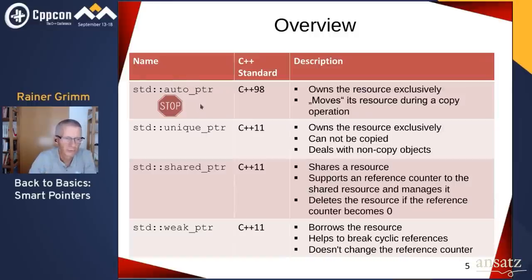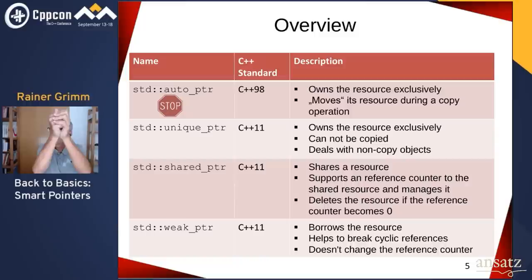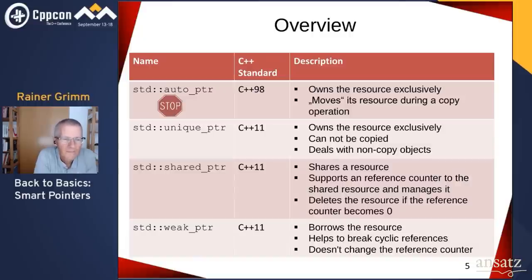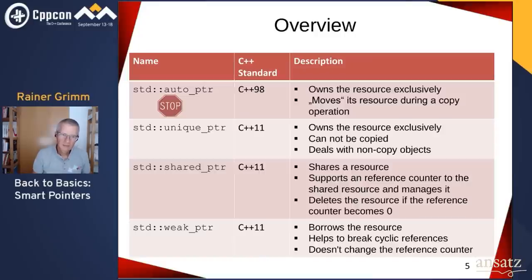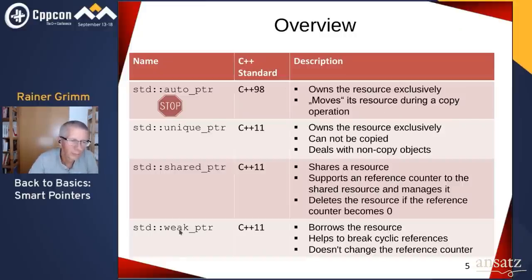Shared pointer models shared ownership. When you copy a shared pointer, a reference counter is increased by one. When you delete it, it decreases by one. When the reference counter becomes zero, the underlying resource is destroyed. Shared pointers have a classical issue: when you have a cycle of shared pointers, the reference counter will never become zero, meaning they are never deleted — a memory leak. To break such a cycle, use a weak pointer in between. That is exactly the job of a weak pointer.